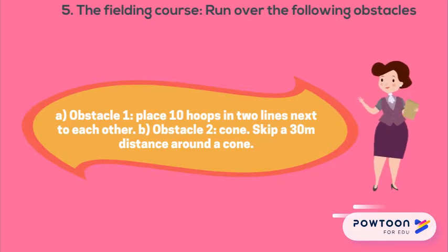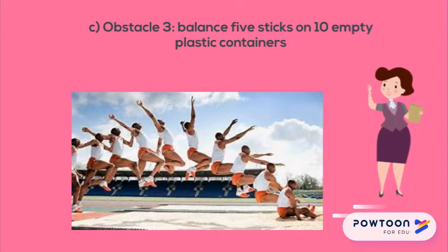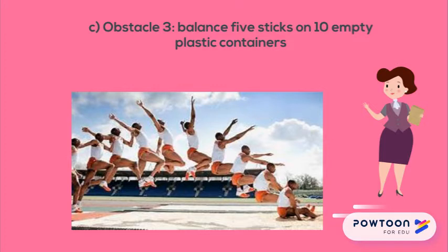Number five, the fielding course runs over the following obstacles. Obstacle one: place 10 hoops in two lines next to each other. Obstacle two: skip a 30 meter distance around a cone. Obstacle three: balance five sticks on 10 empty plastic containers; run with three strides, step off your left leg and jump over the stick; repeat three strides between the sticks; then run back to the beginning and touch the next learner on the shoulder.